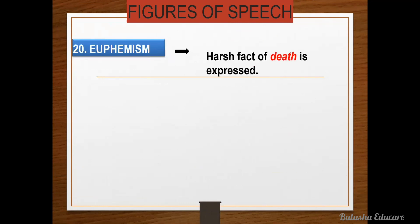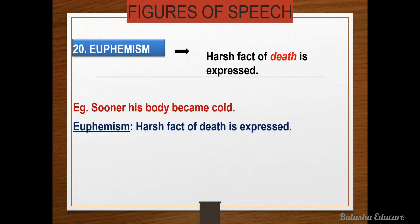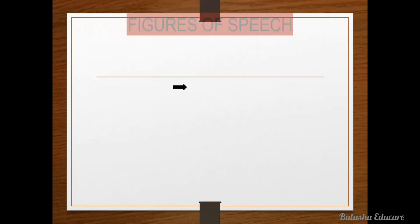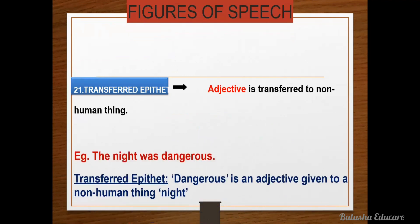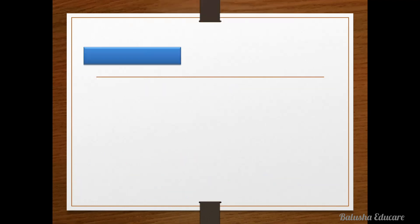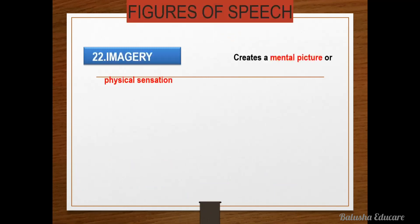Next figure of speech is euphemism — harsh fact of death is expressed in a mild manner. For example, 'Sooner his body became cold' — euphemism, harsh fact of death is expressed softly. The next is transferred epithet — adjective is transferred to non-human things. For example, 'The night was dangerous' — transferred epithet figure of speech, because 'dangerous' is an adjective given to a non-human thing, that is 'night.'